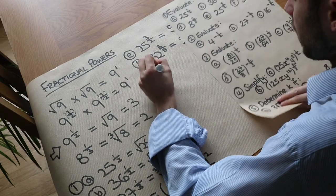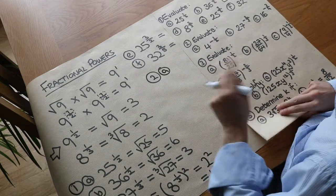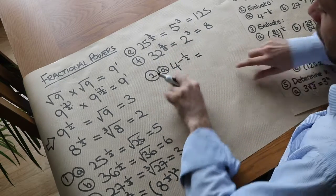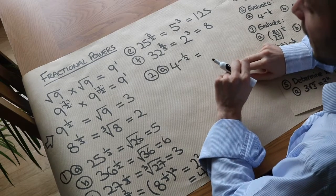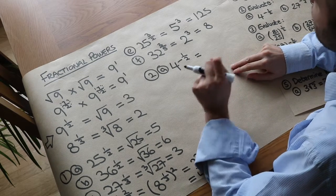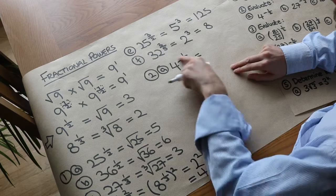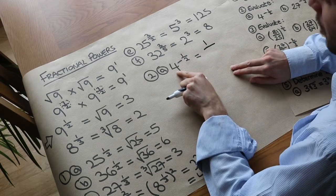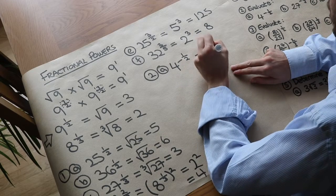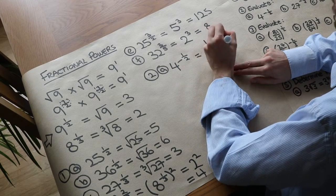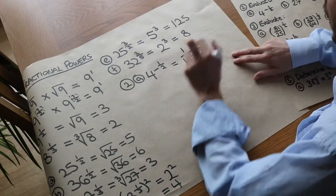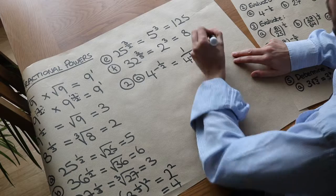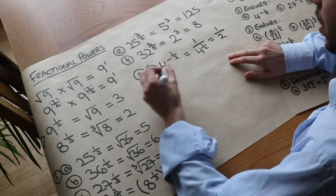Now we'll evaluate expressions with both negative and fractional powers, combining multiple skills. For 4 to the power of minus half: with a negative power, we write 1 over the expression without the negative, giving 1 over 4 to the power of half. Always deal with the negative power first. Then 4 to the half is the square root of 4, which is 2, giving a final answer of a half.